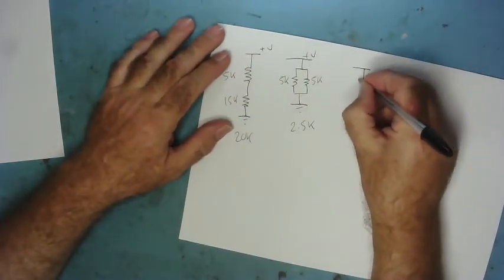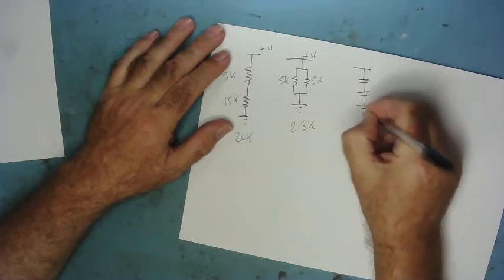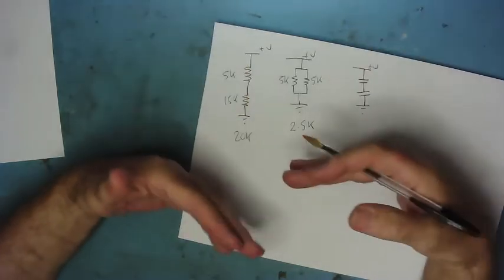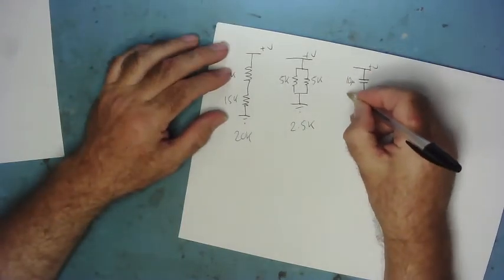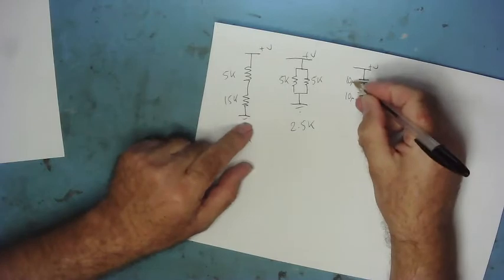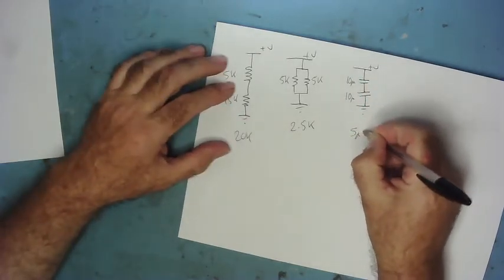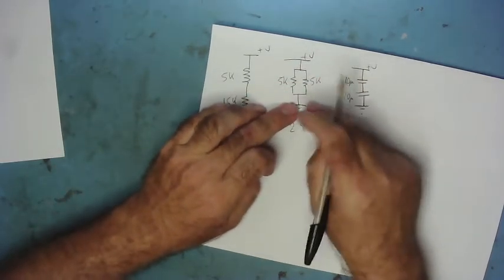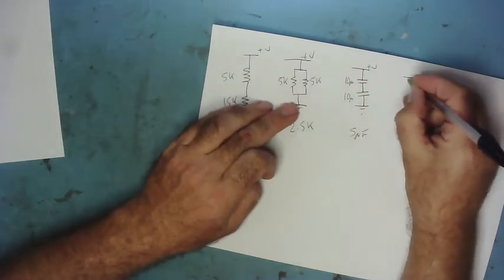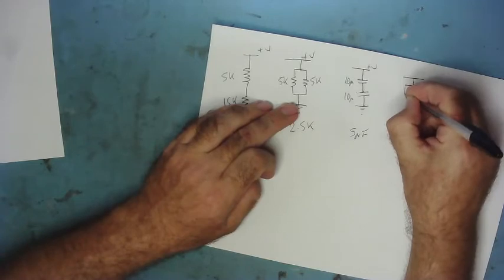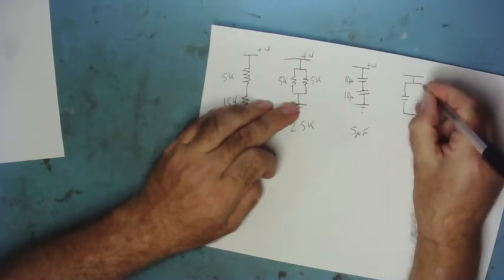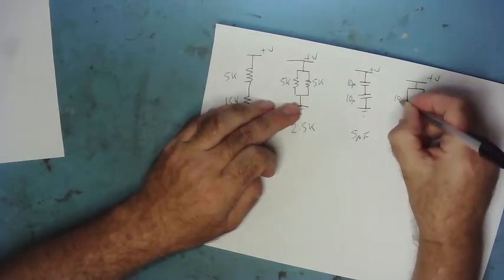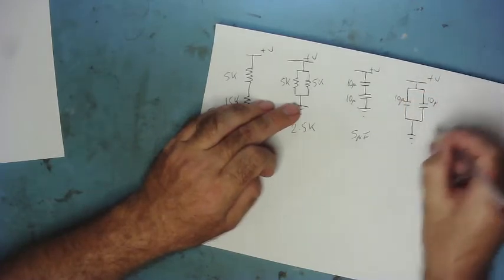If you have two capacitors in series, the capacitance decreases. So if this is 10 microfarads and this is 10, the total isn't the sum of the two — it's the half: 5 microfarads. This has the same mathematical property as parallel resistors. Whereas two capacitors in parallel — if this one's 10 microfarads and this one's 10 microfarads, the total will be 20. So that works as the sum of the two, like parallel resistors work as a sum.